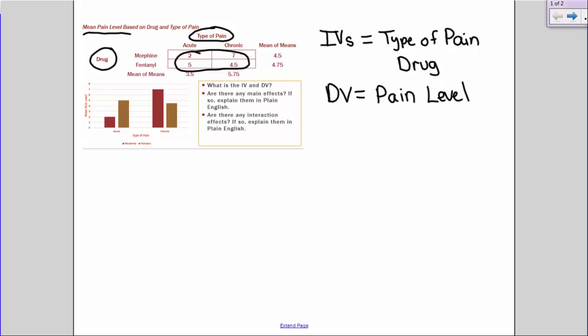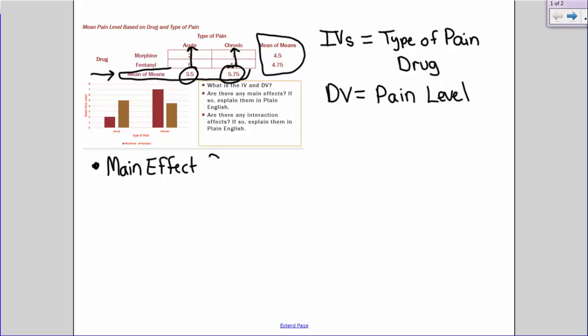Alright. So are there any main effects? If so, explain them in plain English. So remember, when we talk about main effects, we want to focus on our mean of means. So these mean of means down here at the bottom show you the effect of type of pain on pain level. We can see here that there's quite a big difference between these two values. In fact, the 5.75 is larger than the 3.5. The 5.75 represents chronic pain, the 3.5 represents acute pain. So I know that there is a main effect for type of pain.